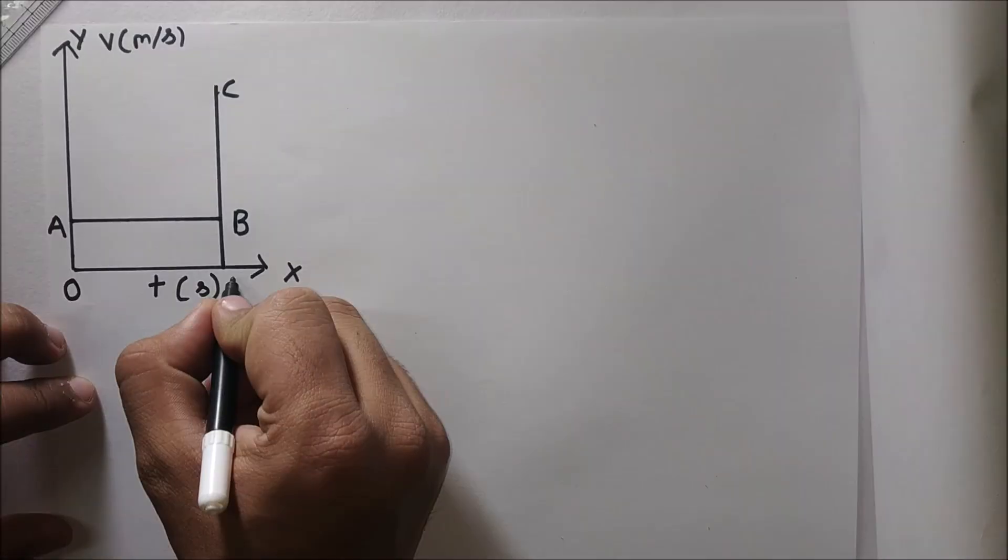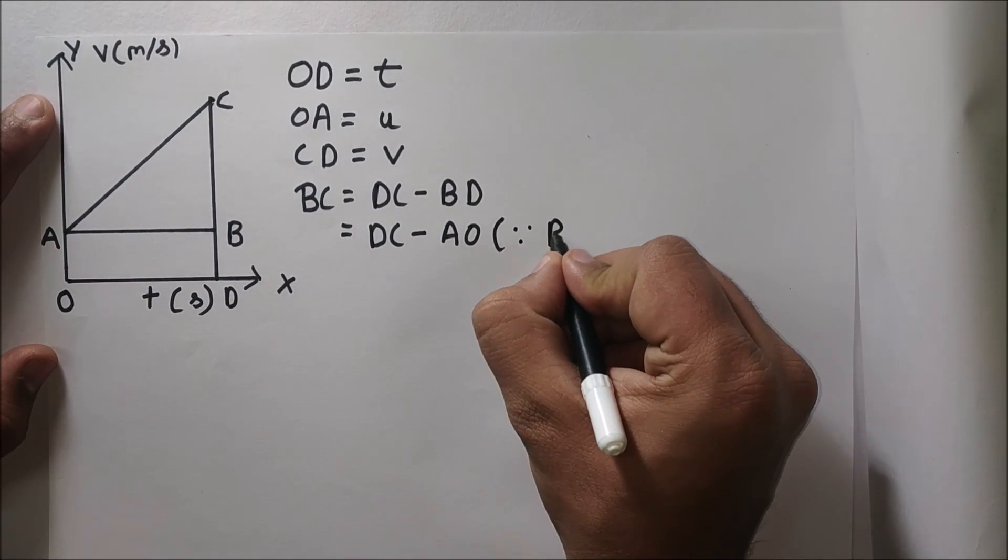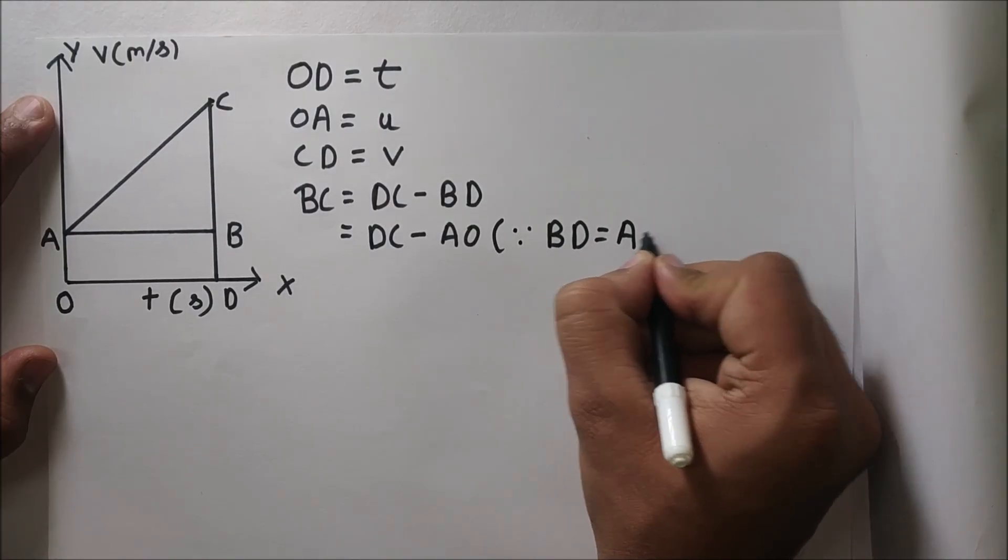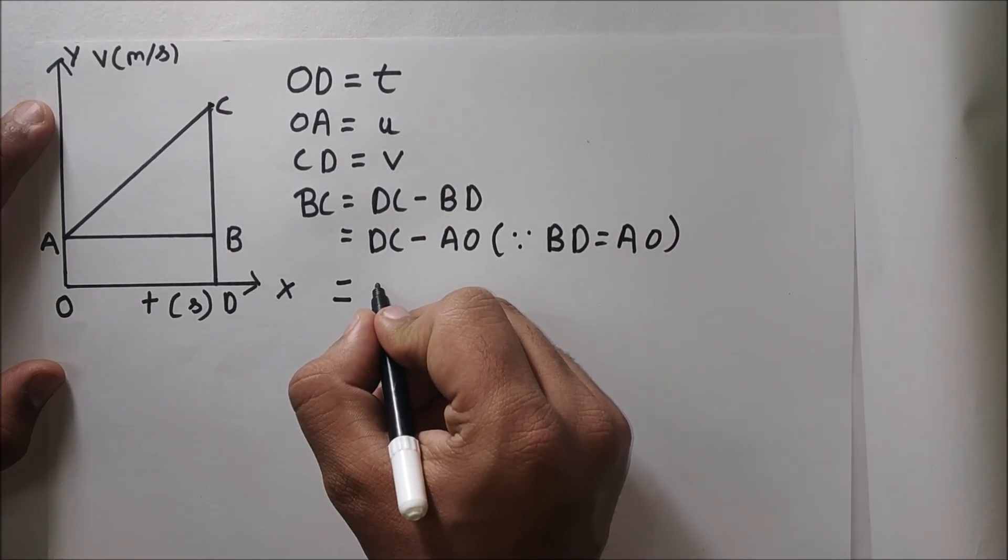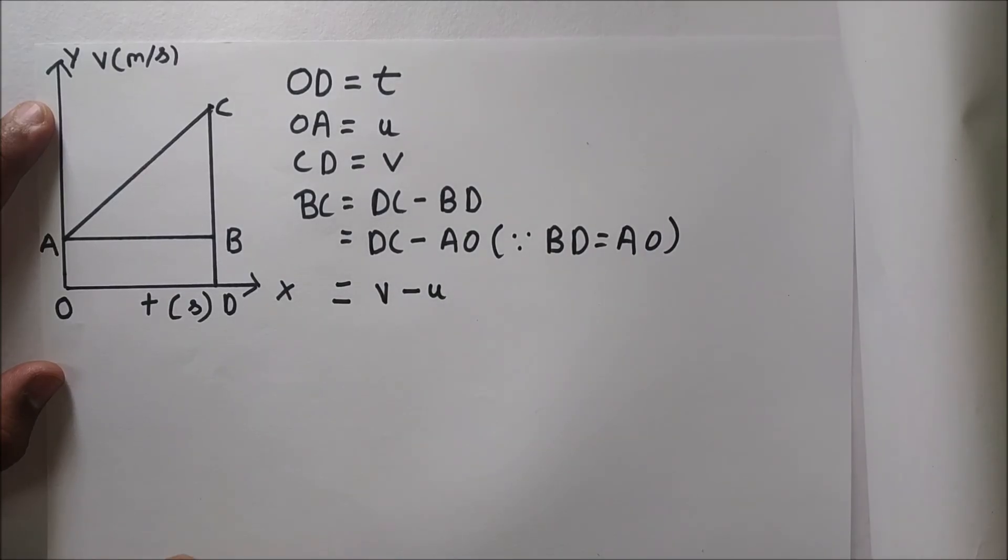So OD is time, OA and BD are equal so it is u, u is initial velocity, CD is v that is final velocity, and BC equals to DC minus BD. BD is equal to AO, so DC minus AO will be equal to BC. So BC is v minus u.